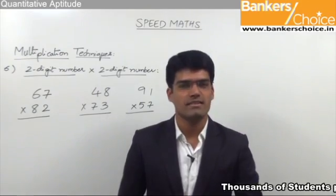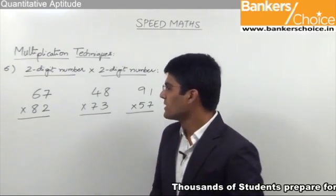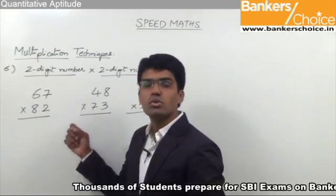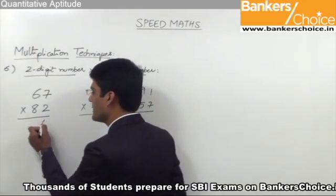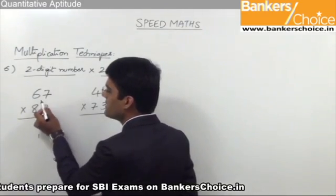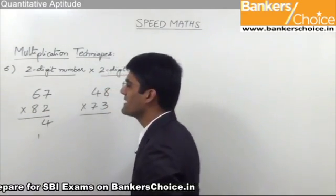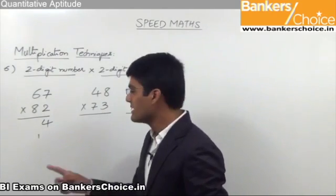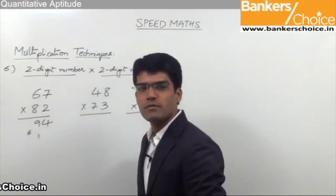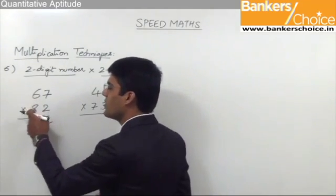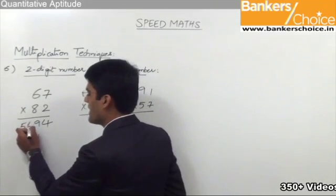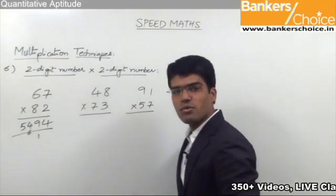Let us now see the correct answers for these three questions. The first one is 67 into 82. 7 into 2 is 14, so we take 4 in the answer and 1 gets carried forward. 6 into 2 is 12, and 8 into 7 is 56. 56 plus 12 is 68. 68 plus 1 is 69. So 9 in the answer and 6 gets carried forward. The last step: 6 into 8 is 48. 48 plus 6 is 54. So the final answer is 5494.